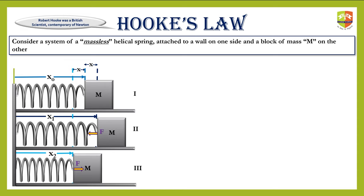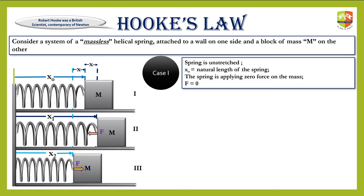This is a system of a massless helical spring — an ideal case. The spring is attached to a wall on one side and a block of mass m on the other. In case one, the spring is unstretched with no deformation — it is in its natural length x₀. The spring is applying zero force on the mass because an unstretched spring creates no force on the adjacent mass m.